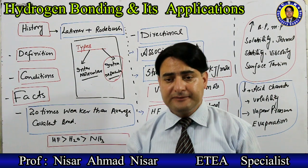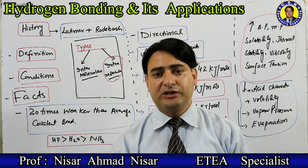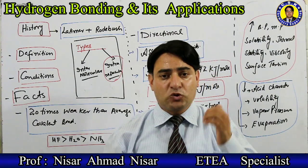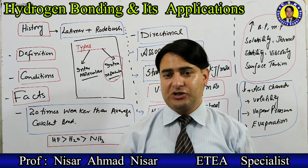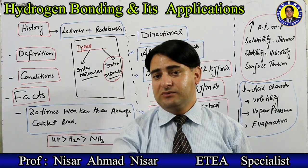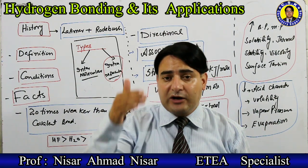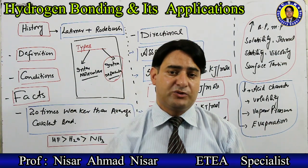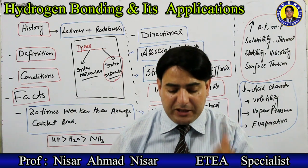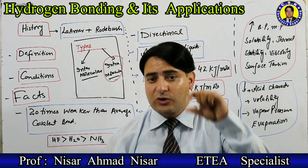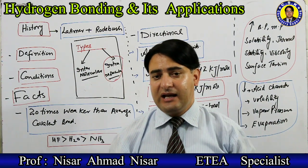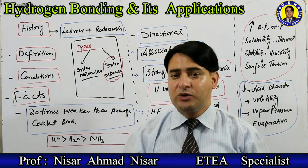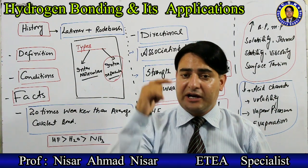Now I will talk about the conditions required for hydrogen bonding. There are two basic conditions for hydrogen bonding. The first condition is that hydrogen should be attached with a highly electronegative atom — mostly fluorine, oxygen, or nitrogen.